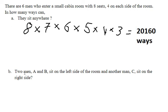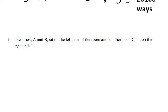The next question: Two men, A and B, sit on the left side of the room, and another man, C, sits on the right side. In this situation, we have 4 seats on the left and 4 seats on the right.